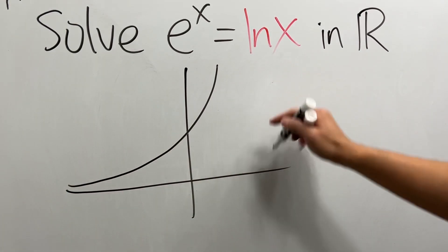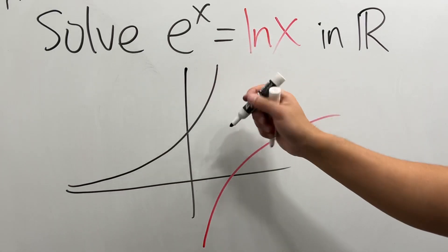And then for natural log of x, in fact, it looks like that. They are the inverse functions of each other.